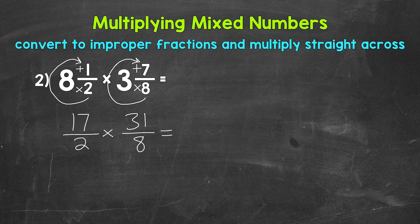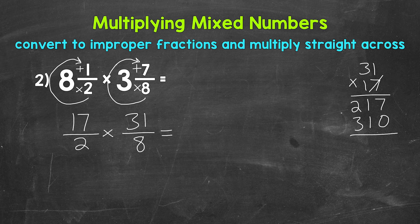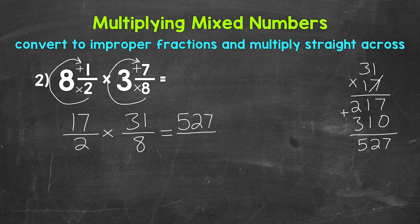Now we can multiply straight across. We have 17 times 31 for the numerators. Let's work that out: 31 times 17 — 7 times 1 is 7, 7 times 3 is 21, then 1 times 1 is 1 and 1 times 3 is 3. Adding up: 7, 2+1=2... we get 527 for the numerator. For the denominators: 2 times 8 is 16. So we end up with 527 sixteenths.